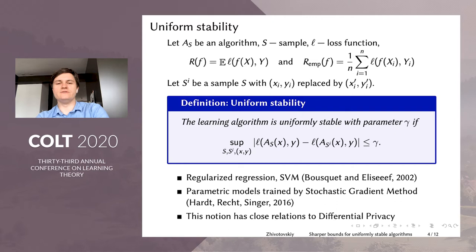And the notion of uniform stability is the following. We say that the learning algorithm is uniformly stable with parameter γ. So this γ may depend on various parameters. For example, it may depend on the sample size. So we say that the algorithm is uniformly stable if the loss of the algorithm trained on the sample S and tested on any point (X,Y) minus the loss of the same algorithm, which is trained on the sample with one point replaced and tested on the same point (X,Y), changes by at most γ with respect to the worst case choice of the sample of the sample replaced by one point and the test point.